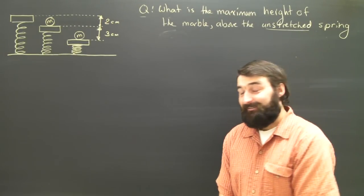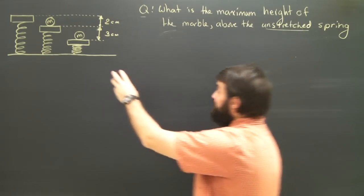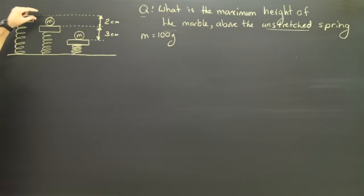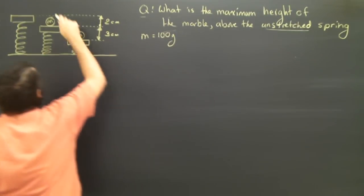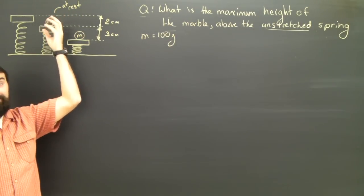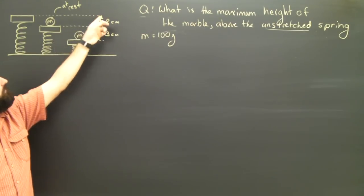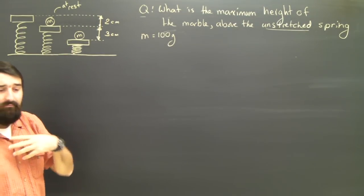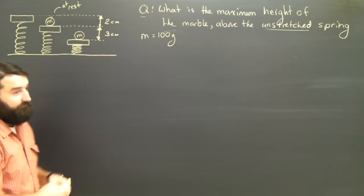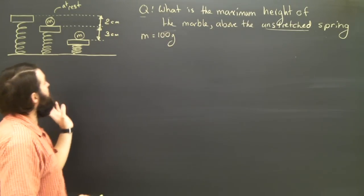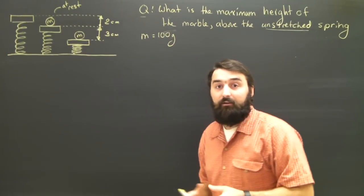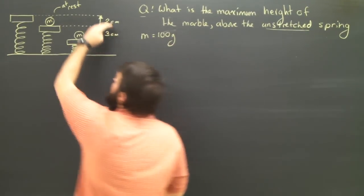This one is going to take a little bit of explaining. We have a marble which has a mass of 100 grams. When it's placed onto a spring and allowed to come to equilibrium — at rest — it depresses the spring by 2 centimeters. Now, some unseen hand pulls the spring down another 3 centimeters. The question is: when the hand lets go and the spring launches the marble, how high is the marble going to reach above the unstretched spring?